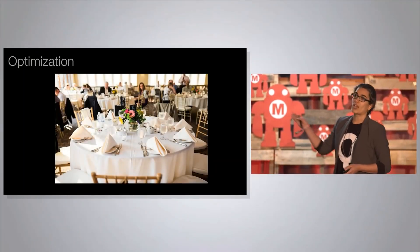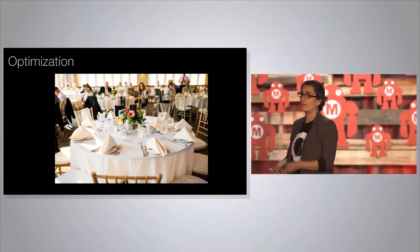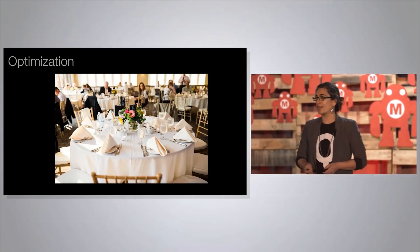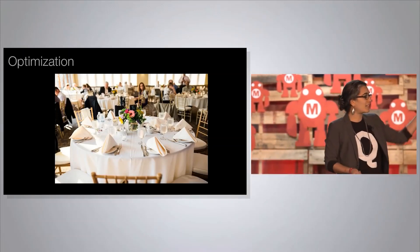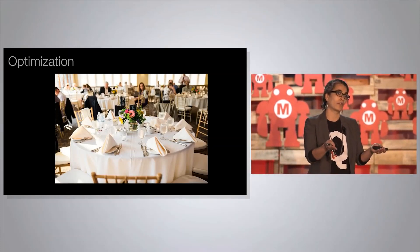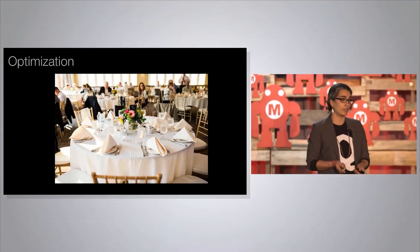The first example is optimization. Optimization is finding the best solution to a problem among many possible solutions. Here's a picture of a table — this is a table at my wedding, one of many tables. You can see 10 people around a table. You have 10 people over for dinner — how many different ways are there to configure 10 people around a table? The answer is 10 factorial. The number 10 seems so small, but 10 factorial is 3.6 million. There are 3.6 million ways to arrange 10 people for dinner. Next time you have dinner with 10 friends, share that fun fact with them.